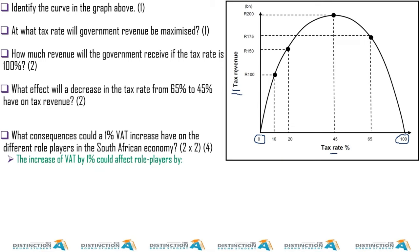And if government doesn't tax at all, they'll get nothing because they are not taxing anyone. In this case, you'll see that 45% is the tax rate that government should charge to maximize their revenue. So if government's target is 200 billion rands, like you see in this scenario, they would have to charge 45% tax.